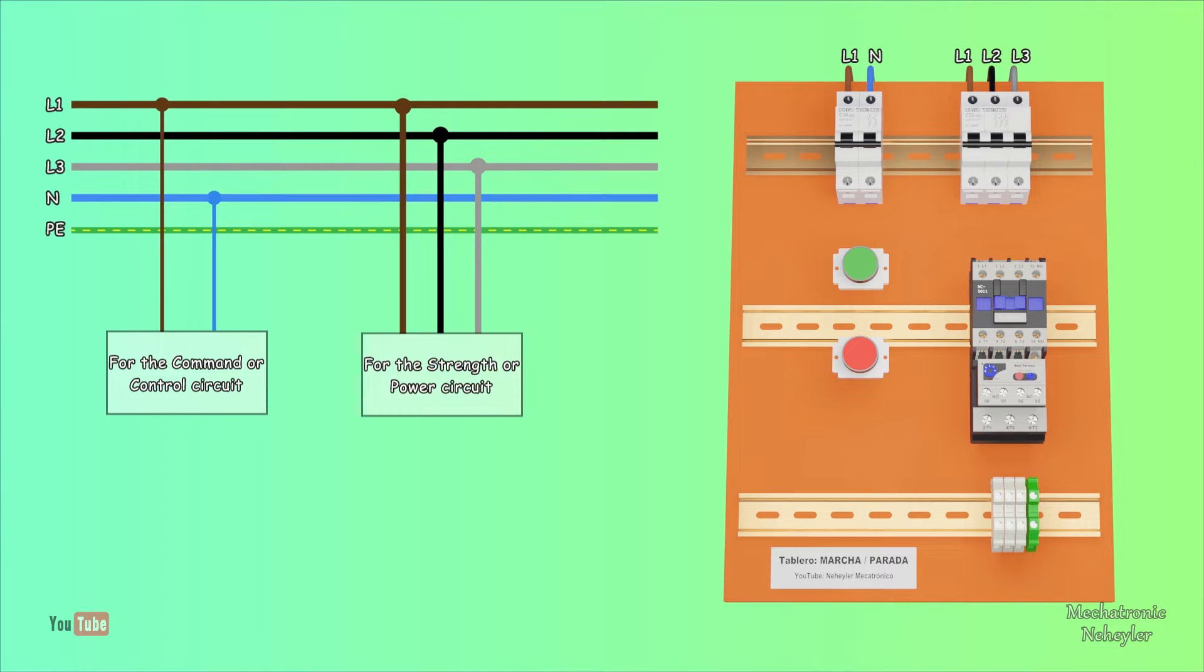Depending on the country you are viewing this video from, there are different voltage levels. For example, 127 volts corresponds to single phase and 220 volts to three phase. In other countries, 220 volts correspond to single phase and 380 volts to three phase.